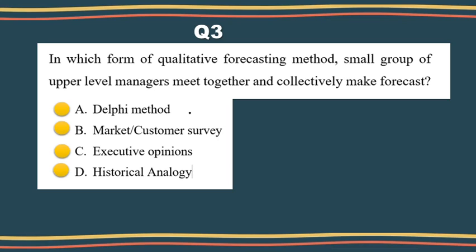In terms of the assessment, the data is going to be used to analyze the model development in order to forecast the standard. In historical analysis, the data is used to show the demand in order to forecast the future. So, in which form of qualitative forecasting method does a small group of upper-level managers meet together and collectively make a forecasting method?